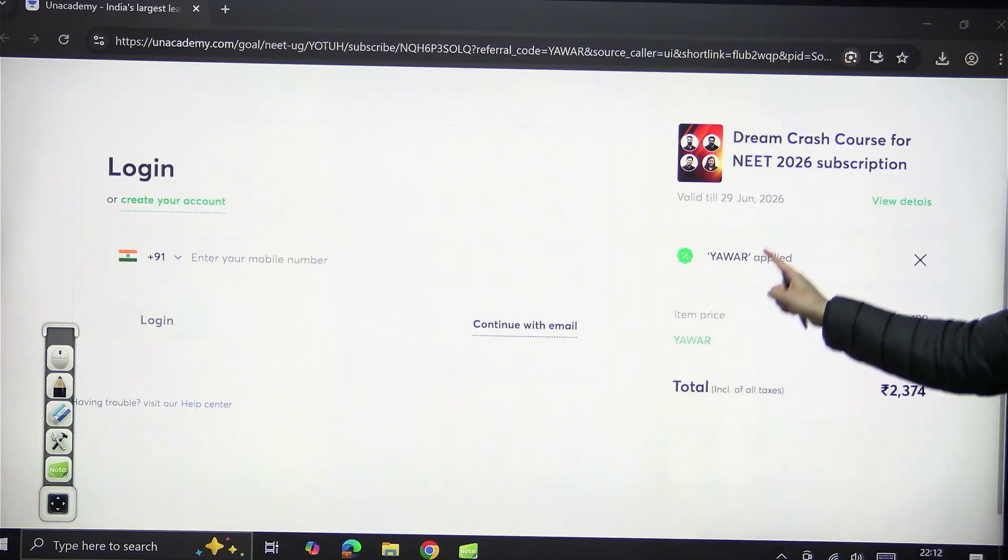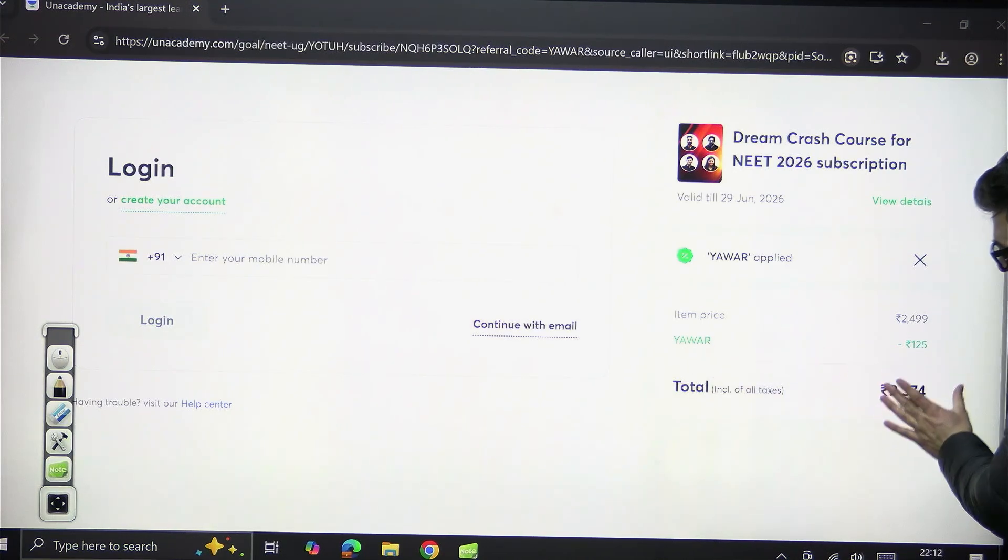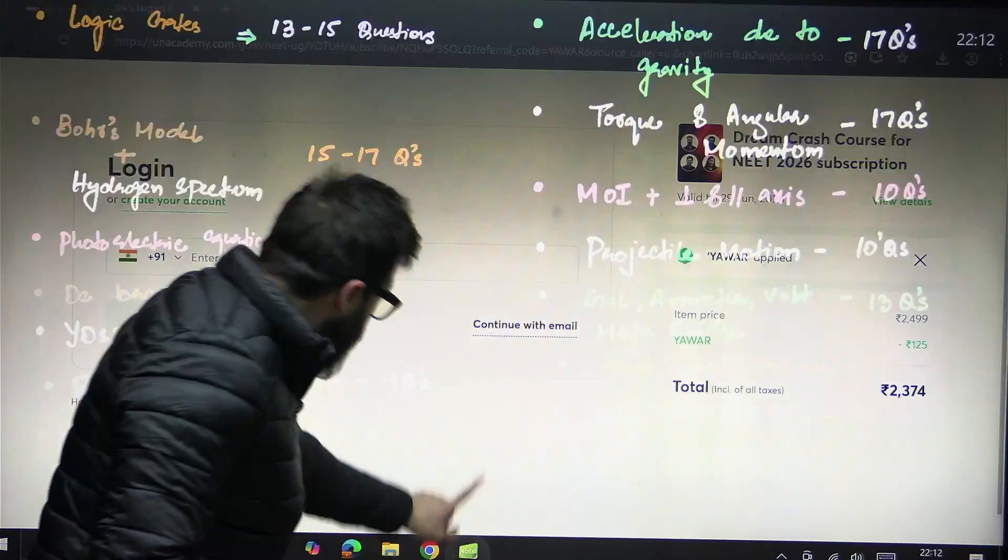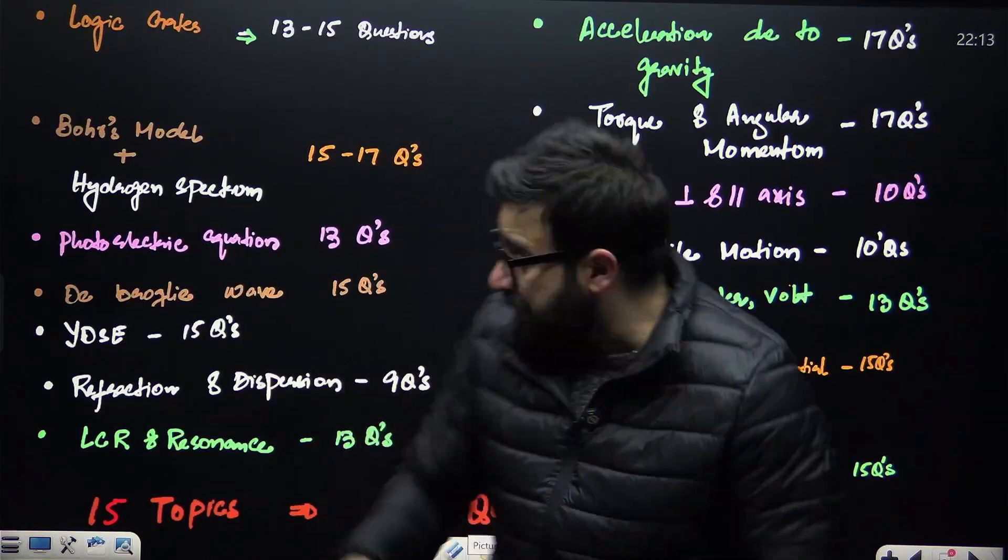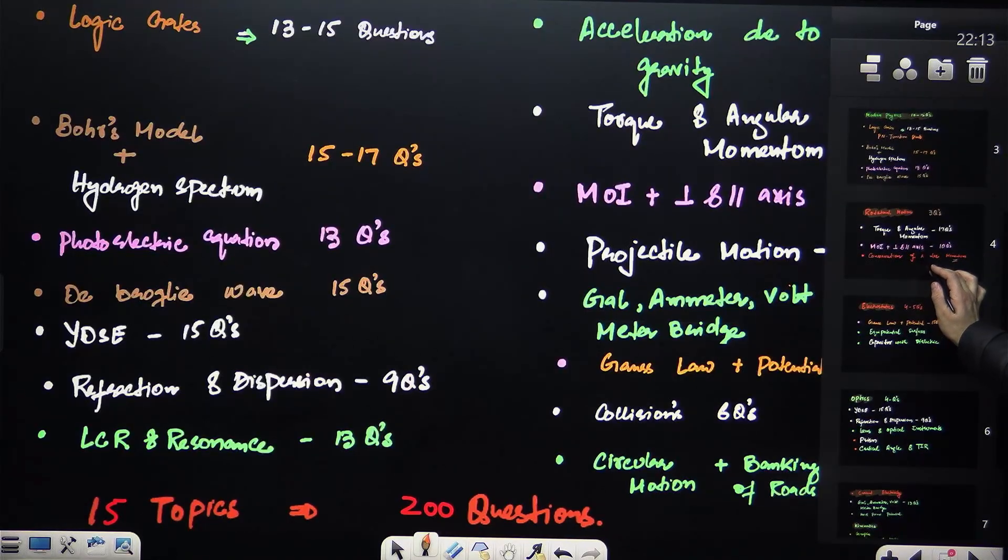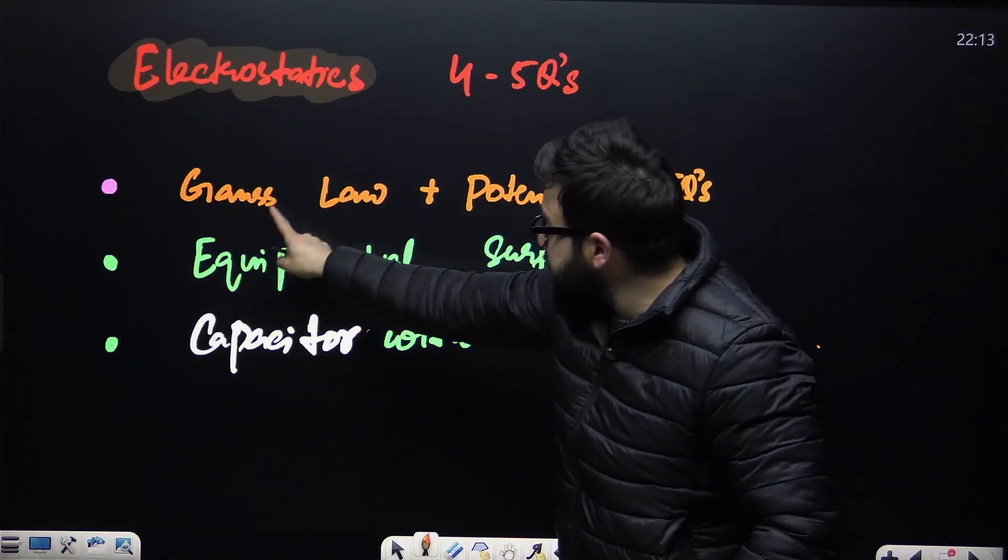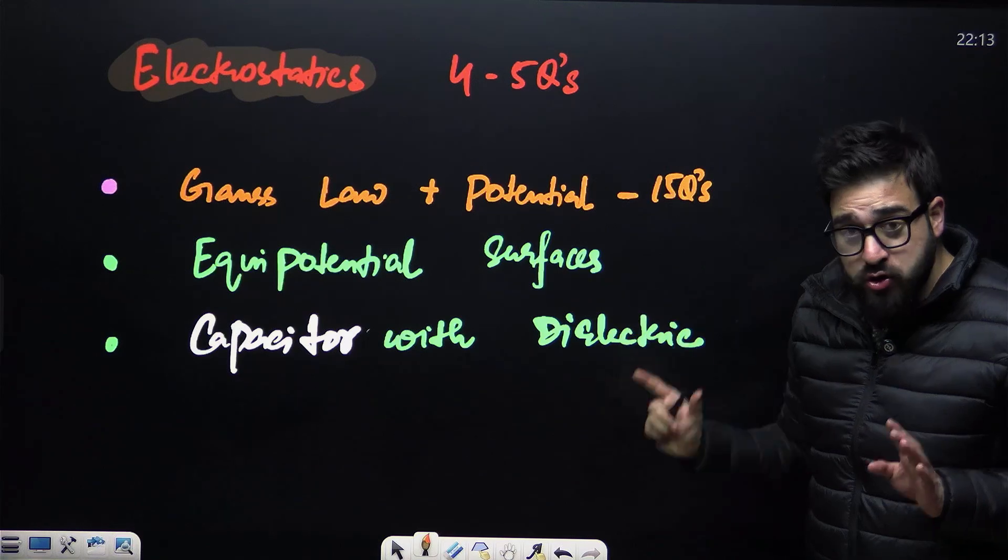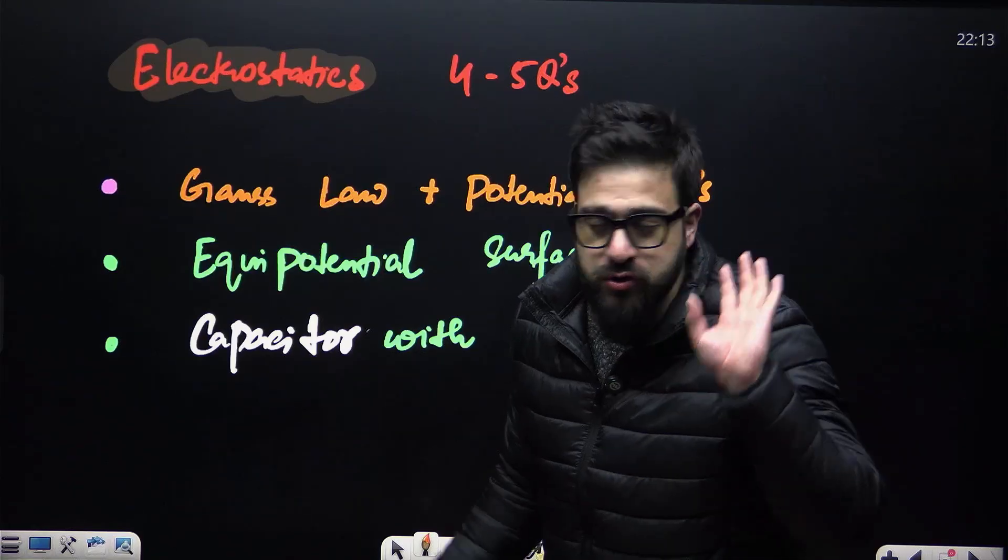And you land onto this page, automatically code will be applied, this YAWAR, and you'll get the maximum possible discount. And my dear NEET aspirants, I will be taking these topics only in the Dream Crash Course batch so that you can score maximum, because this is the analysis done on the basis of the past 10 years papers. Then, my dear NEET aspirants, we talk about electrostatics. In electrostatics you have Gauss law plus potential, 15 questions, and then equipotential surfaces also over here, and capacitors with dielectrics. Okay, try to look at the field and the force also in capacitor, in this electrostatic portion.